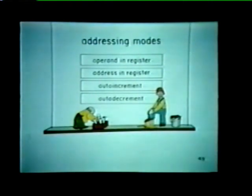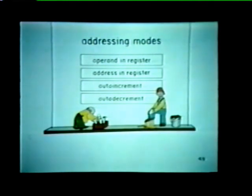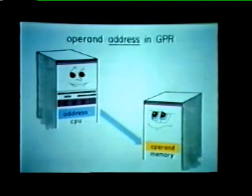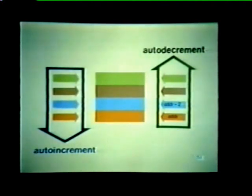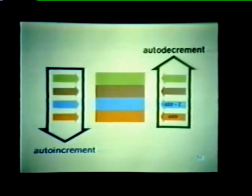Let's quickly recap the four addressing modes we've now covered. First, we can store operands right in our general purpose registers, giving the CPU immediate access to frequently used data. We can also store an operand address in one of these registers, which then directs the CPU to a memory location that contains the operand. Finally, if we're working with lists of operands, we can select either the auto-increment or auto-decrement modes, which automatically modify an address contained in the GPR — each time the address is incremented or decremented, it advances to the next operand in the list.